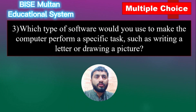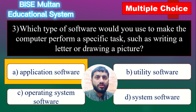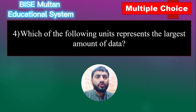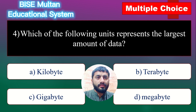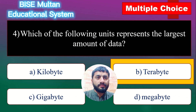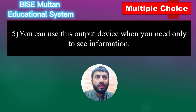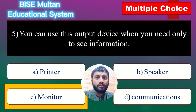Question 3. Which type of software would you use to make the computer perform a specific task, such as writing a letter or drawing a picture? The answer is Application Software. Question 4. Which of the following units represents the largest amount of data? The answer is Terabyte. Question 5. You can use this output device when you need only to see information. The answer is Monitor.